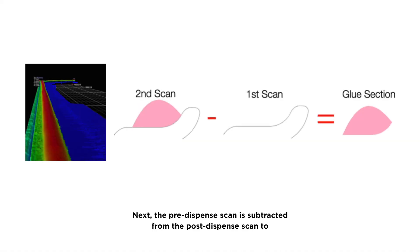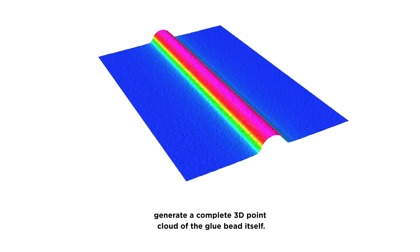Next, the pre-dispense scan is subtracted from the post-dispense scan to generate a complete 3D point cloud of the glue bead itself.